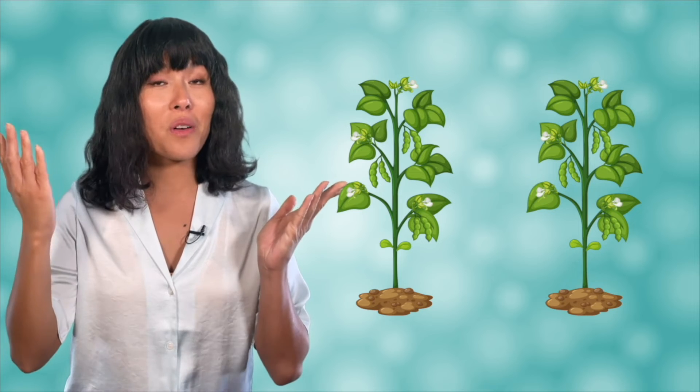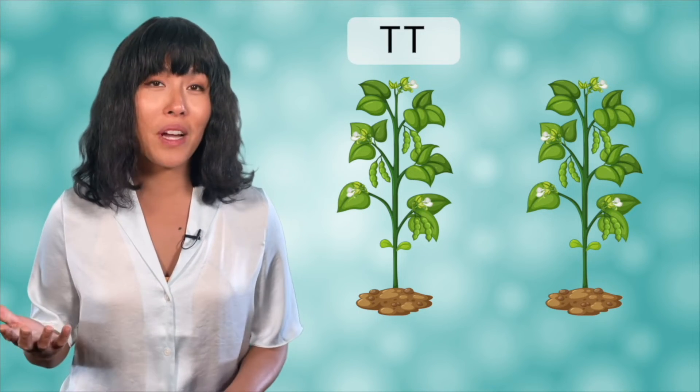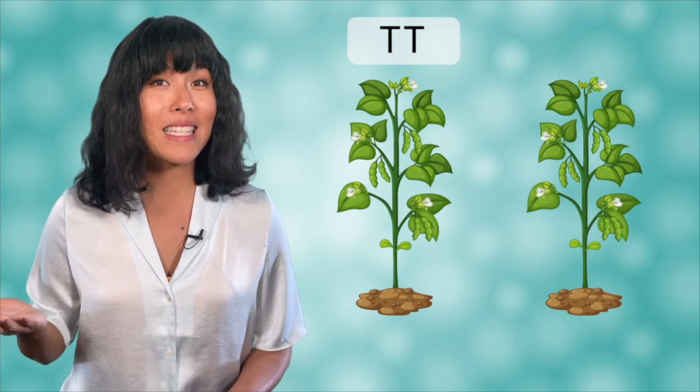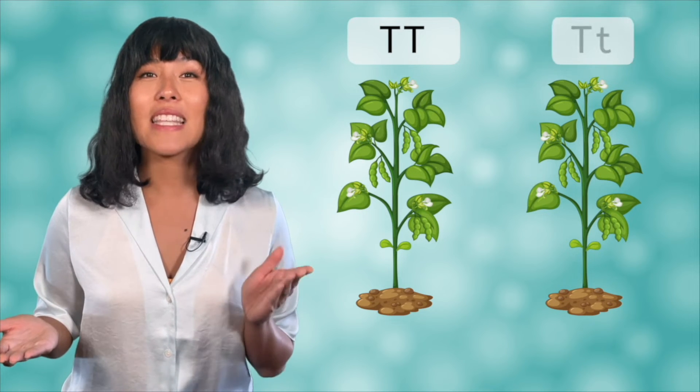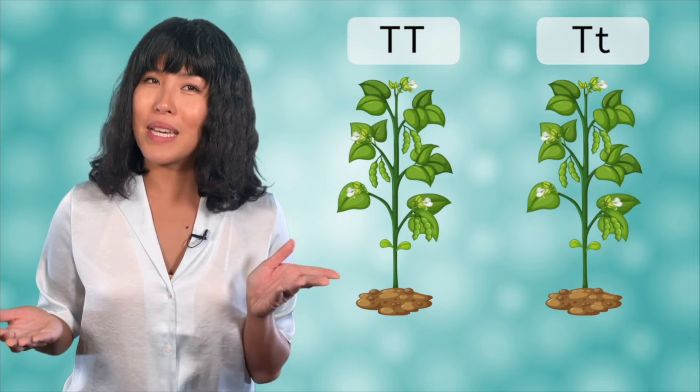Let's run through another example of a Punnett square to make sure you've got the hang of it. This time, we'll cross two of Mendel's pea plants, both tall, which is the dominant trait over short. One tall parent is homozygous, big T, big T. The other has the heterozygous genotype, big T, little t.